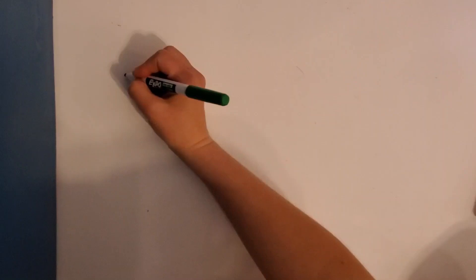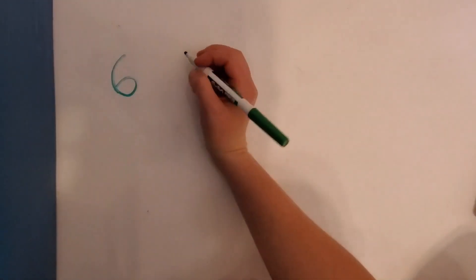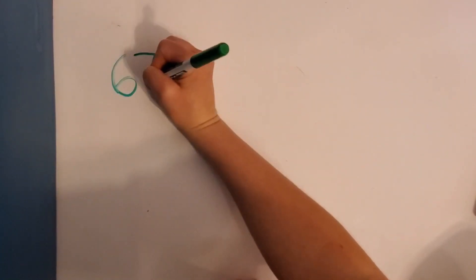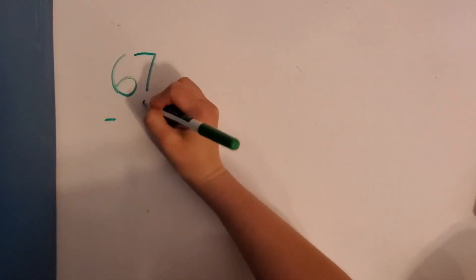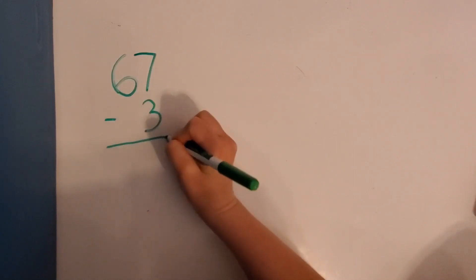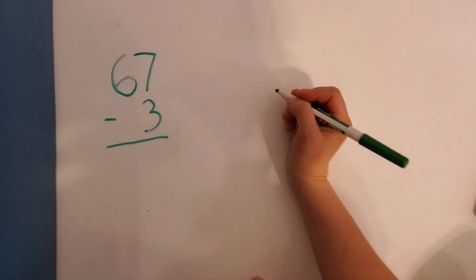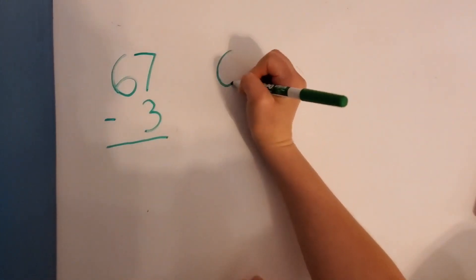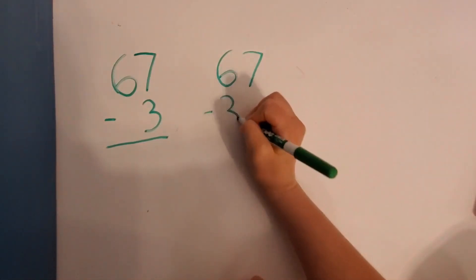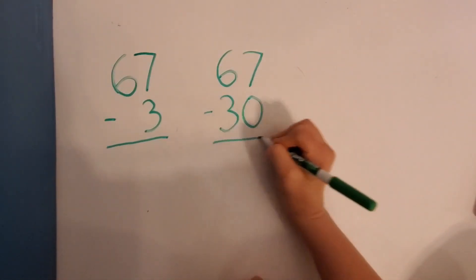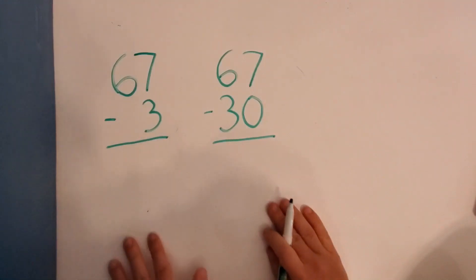So I'm going to put two problems. One's going to be subtracting with 1s. One's going to be subtracting with 10s. So we have 67 minus 3 equals. And then we're going to have 67 minus 30 equals.